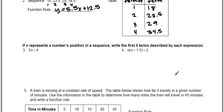If n represents a number's position in a sequence, write the first five terms described by each expression. We're just going to do number 4 here. So the first five terms, that's referring back to that table. We have our term number and the term. So they want us to find term number 1, 2, 3, 4, 5.